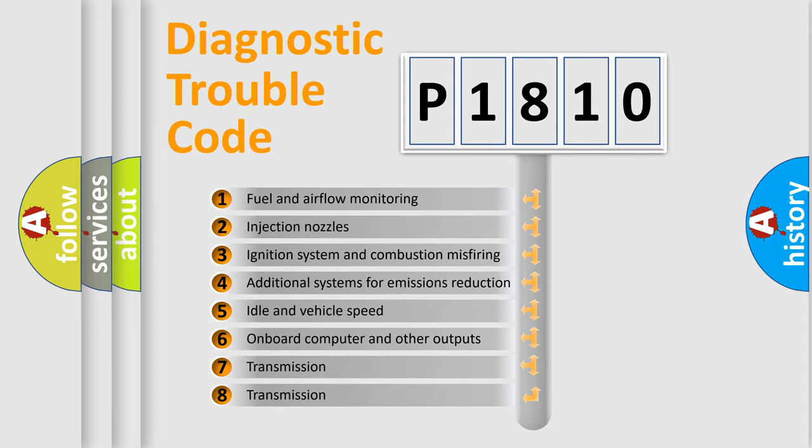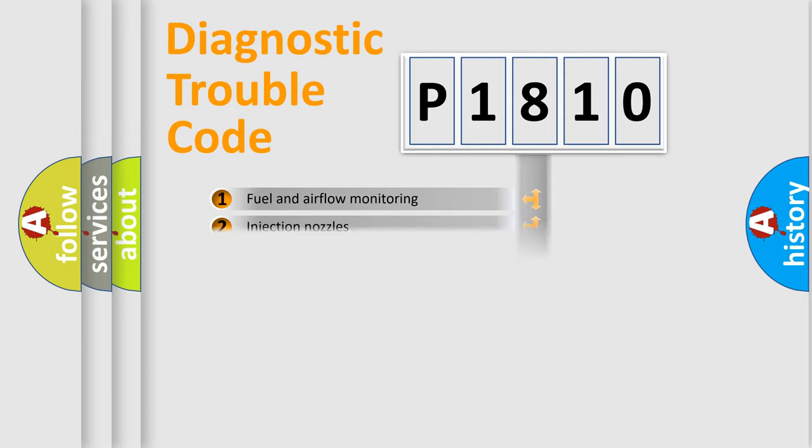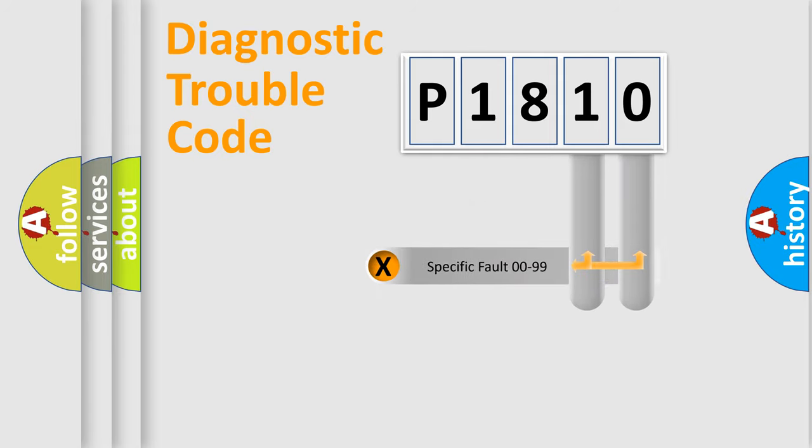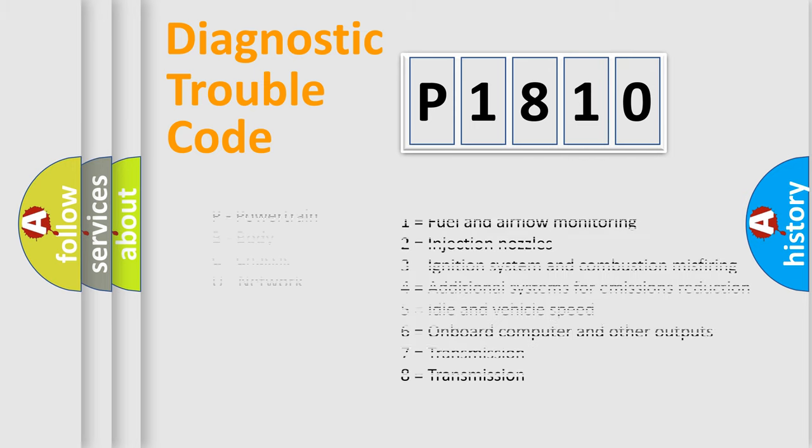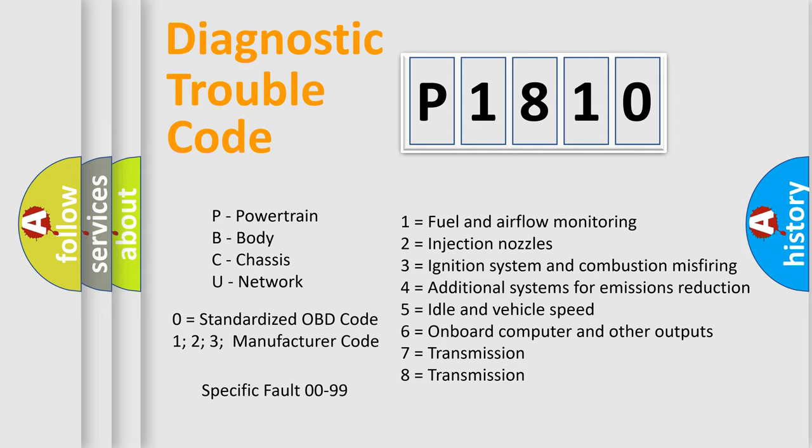The distribution shown is valid only for the standardized DTC code. Only the last two characters define the specific fault of the group. Let's not forget that such a division is valid only if the second character code is expressed by the number zero.